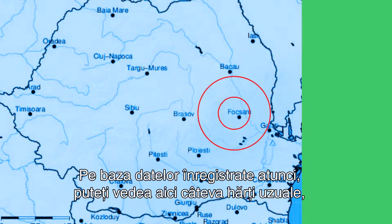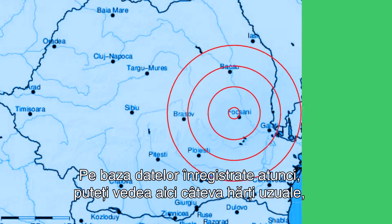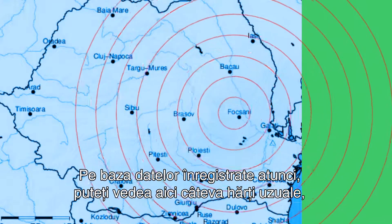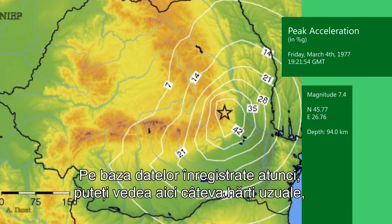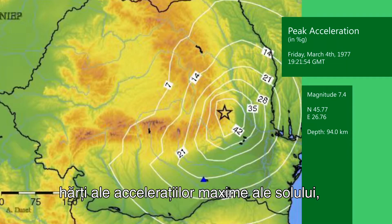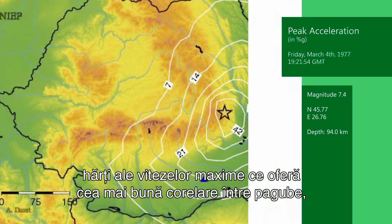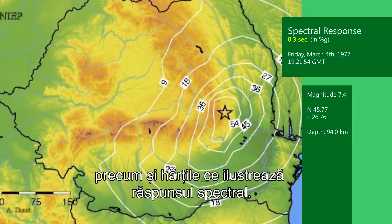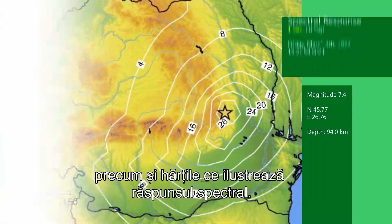Based on the monitoring data, you can see here several common maps generated after the earthquake: the peak ground acceleration map, which measures the earthquake's acceleration through the ground; the peak ground velocity map, which provides the best correlation with damage; and the spectral response maps.